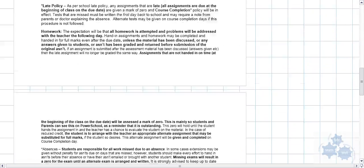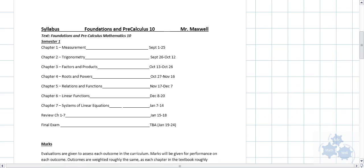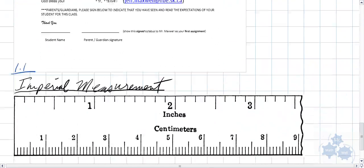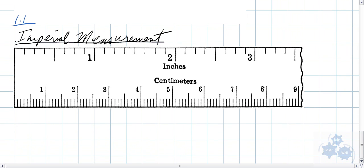Foundations of Math 10 is what we're looking at here, and we are going to start with Chapter 1, Measurement. We're going to talk about Imperial Measurement in Section 1.1. So if you look to page 4 with me, page 4 of your textbook.